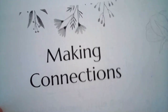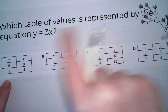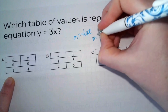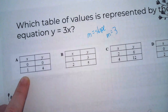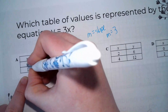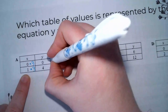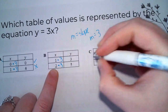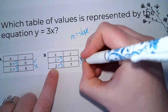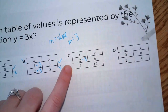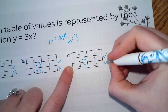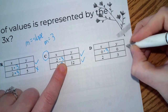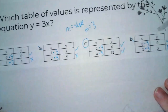Next we're going to be making connections. Which table represents the values for y equals 3x? Our m here is 3, so 3 times x gives me y. In option A, 1 times 3 gives 4 — that's false. In option B, 2 times 3 gives 5 — false. Option C: 2 times 3 is 6 and 4 times 3 is 12 — yes! Double-checking D: 2 times 3 is 3 — false. So the answer is C.